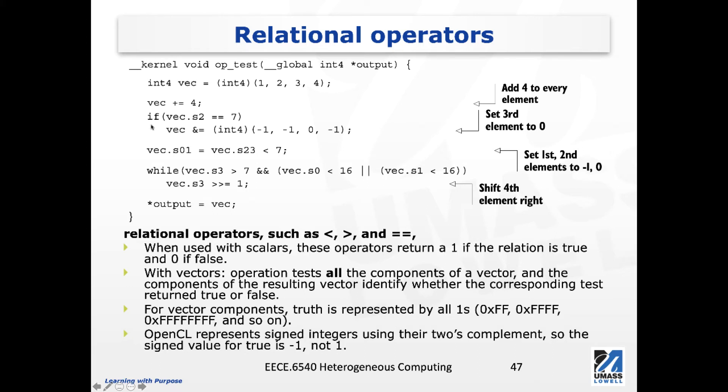Then we have an if statement. Note here that we chose one of the elements from this vector, and we are choosing the third element, which is this one, because we are counting index from 0. This is element 0, element 1, element 2, and element 3. So indeed, at this moment, this element is 7. So this line of code will be executed.